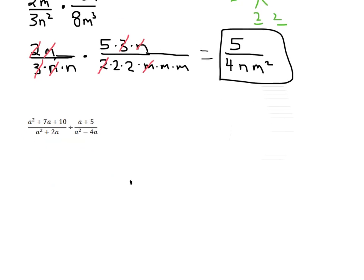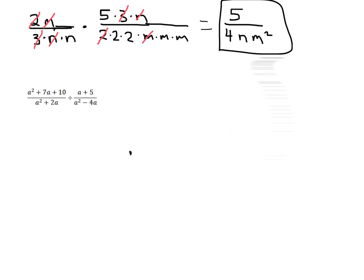Alright, let's go down here and take a look at another one. So now let's take a look at this. Again, our first step is we're going to flip the second one over. So let's take a look at this. We're going to flip the second one. We'll rewrite everything else. It's going to be a squared plus 7a plus 10. So don't do anything to the first one. And the second one, the denominator stays the same, a squared plus 2a. We're going to change this to times. On top, we're going to have a squared minus 4a. On the bottom, we're going to have a plus 5.